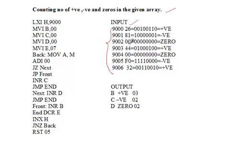All inputs are 8-bit numbers. For example, 26 in hexadecimal: 2 stands for 0010 and 6 stands for 0110, making a total 8-bit number. First, we need to understand how to classify each number as positive, negative, or zero.